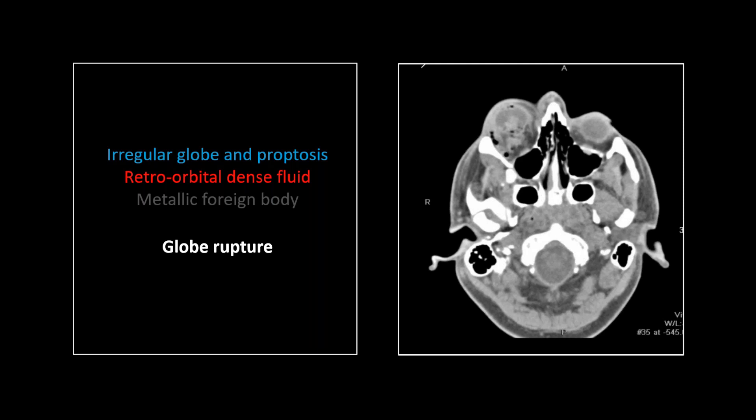So if you see anything out of round — as old Dr. Pitt used to call it — anything that is not perfectly round, you should be considering calling it. That's especially true with the globe and the femoral head. Here you can see it's obviously distorted. There's increased density inside consistent with hemorrhage, and there's quite a bit of retrobulbar stranding and gas as well.